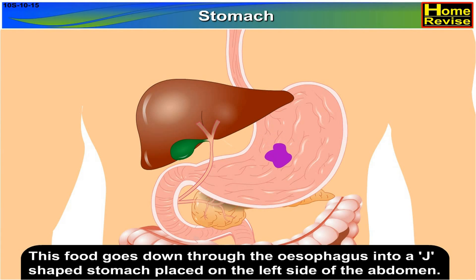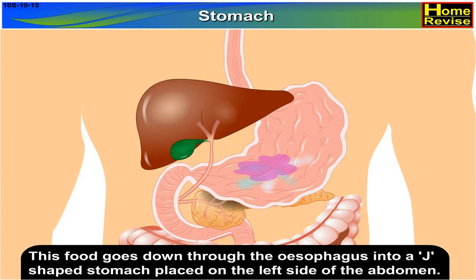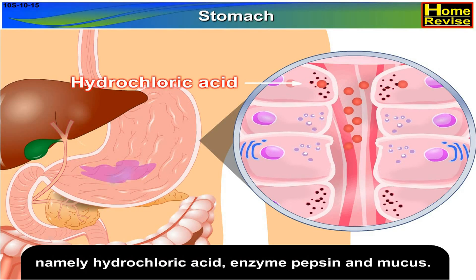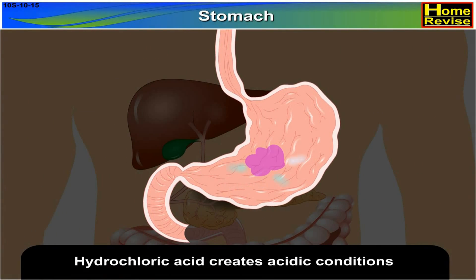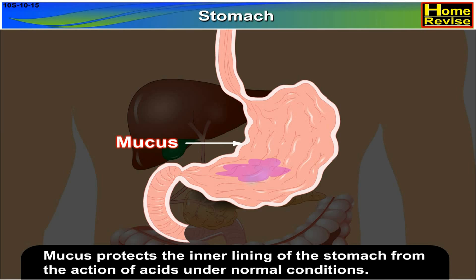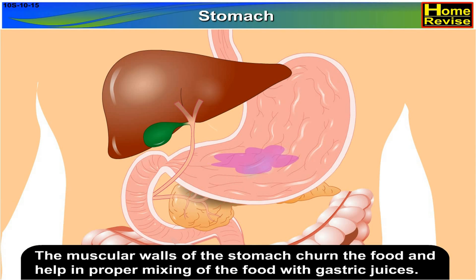This food goes down through the esophagus into a J-shaped stomach placed on the left side of the abdomen. The gastric glands present in the wall of the stomach release three gastric juices: hydrochloric acid, enzyme pepsin, and mucus. Hydrochloric acid creates acidic conditions necessary for the action of pepsin, which digests proteins. Mucus protects the inner lining of the stomach from the action of acids under normal conditions.